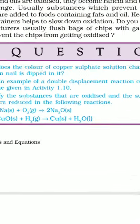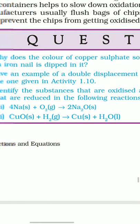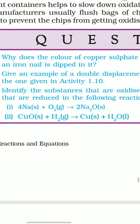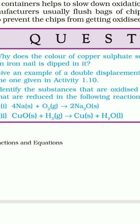Identify the substances that are oxidized and the substances that are reduced in the following reactions. 4Na solid form plus O2 gas form gives 2Na2O. In this reaction, sodium is oxidized to sodium oxide. CuO plus H2 is oxidized to form water, while copper oxide is reduced to copper.